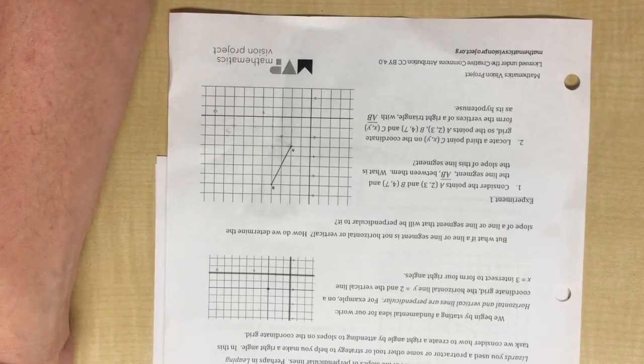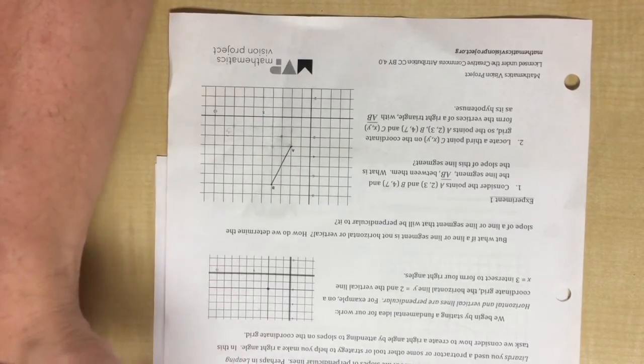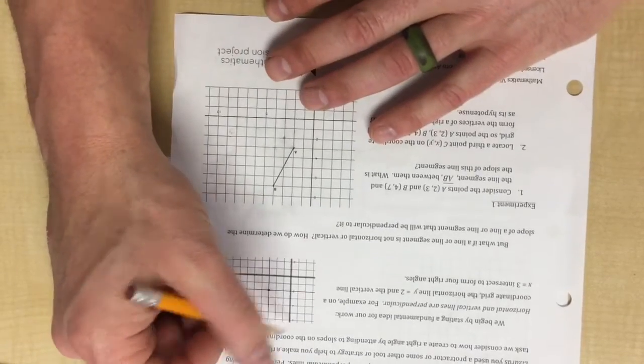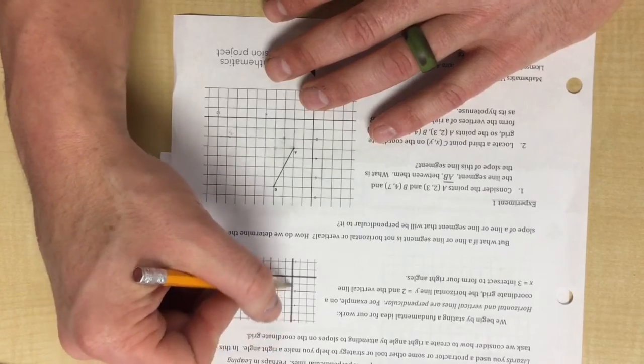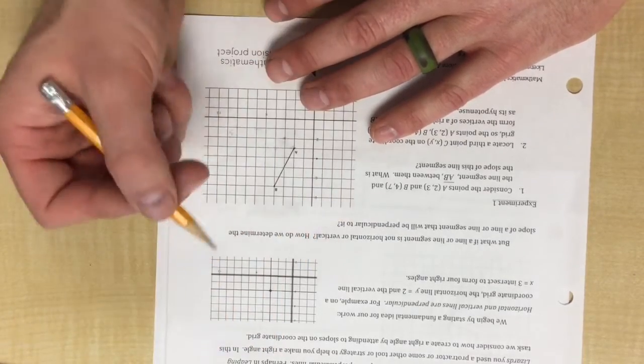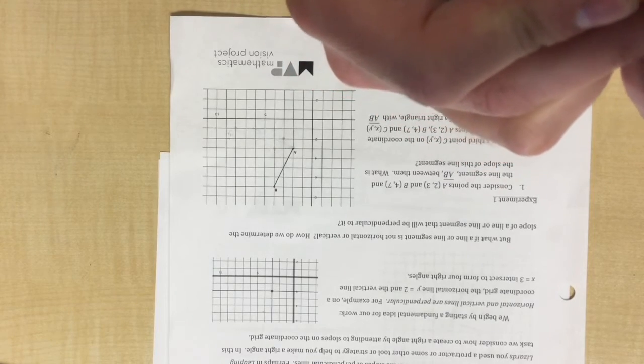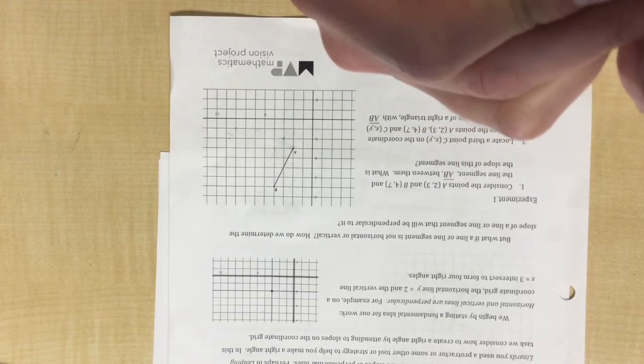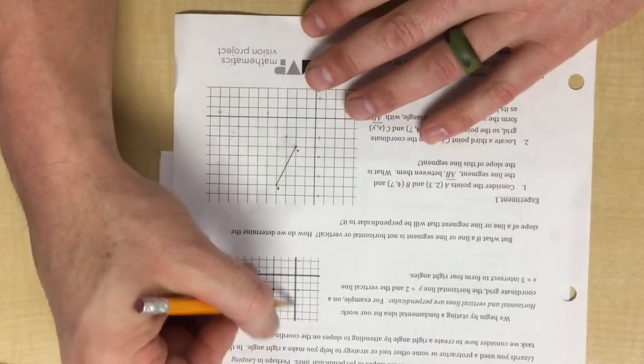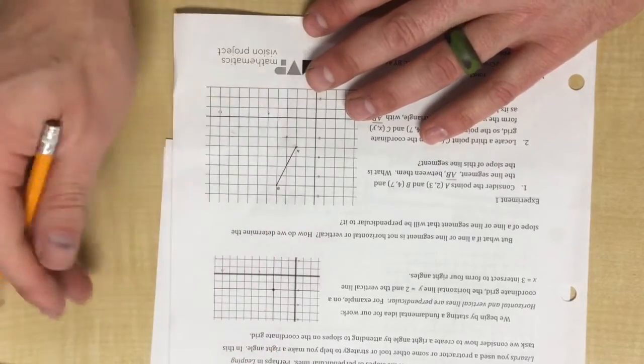Turn to experiment one. In the instructions, they talk about two lines on a coordinate plane, like this one and this one, and how if they are perpendicular, we know that they form 90 degree angles because this one is vertical and this one's horizontal. That's really easy to see.